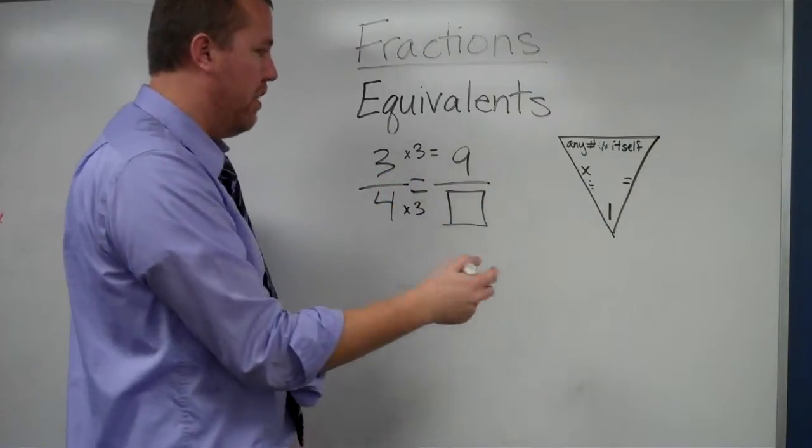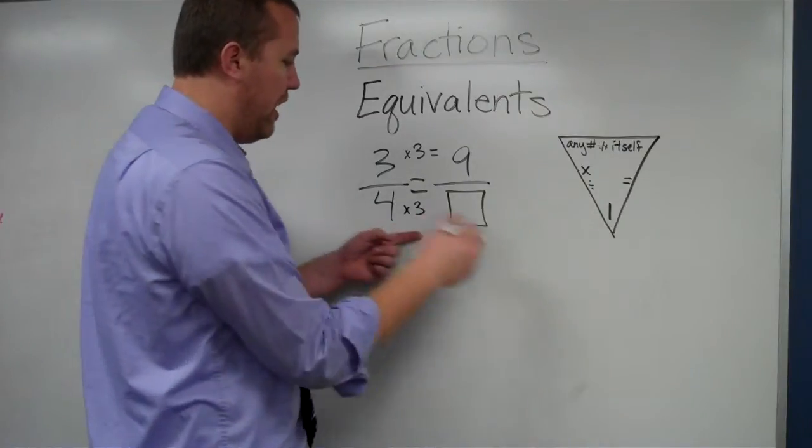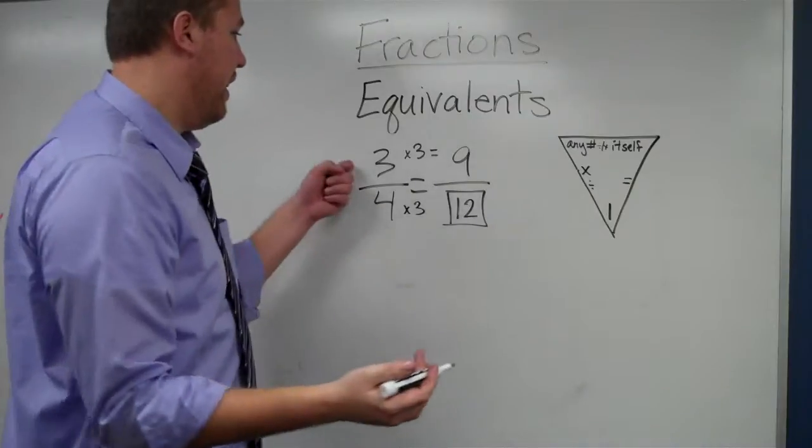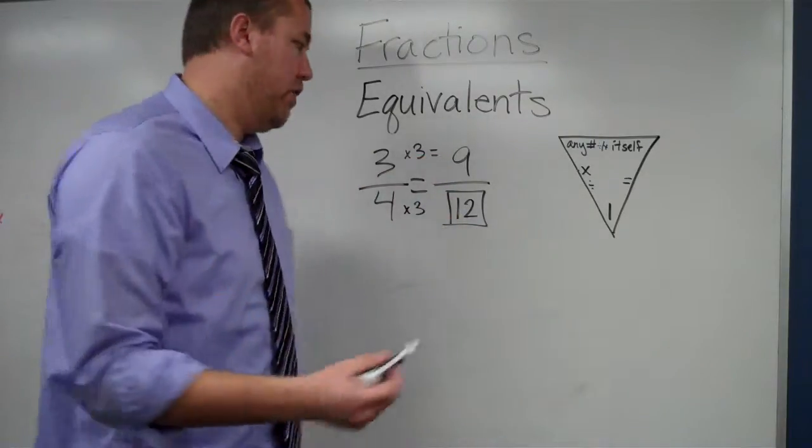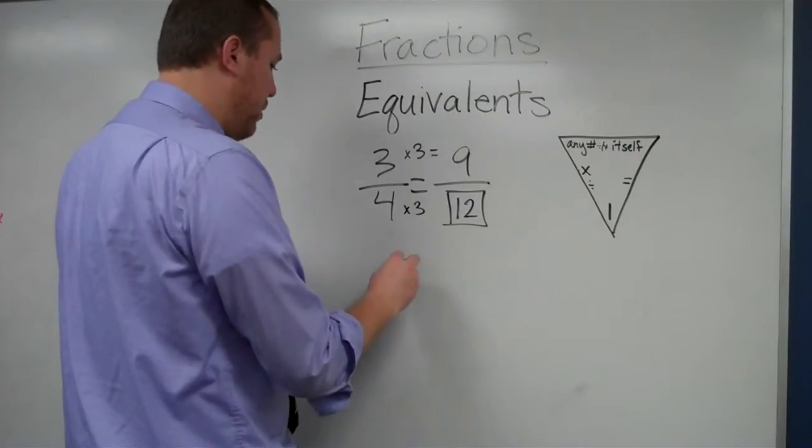Because 3 times 3 equals 9, so I just multiply the bottom, the denominators, by the same thing. So 4 times 3 equals 12. That way, you can see that 3 fourths equals 9 twelfths. Another example of this may come in the other way.